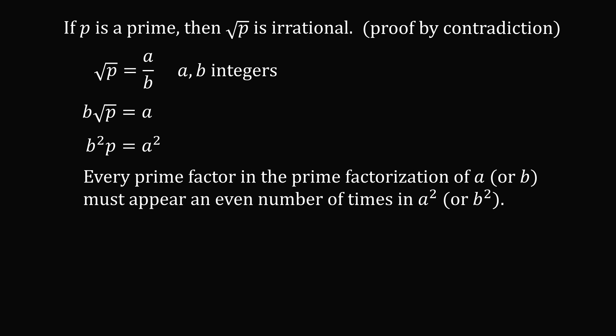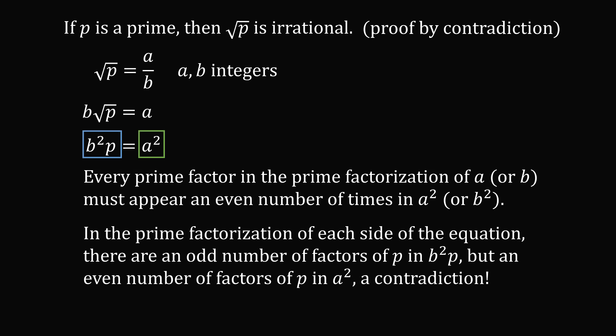Now, every prime factor in the prime factorization of A or B must appear an even number of times in A² or B². The left hand side B²p will have an odd number of factors of p, while the right side A² will have an even number of factors. So, in the prime factorization of each side of the equation, there are an odd number of factors of p in B²p, but an even number of factors of p in A². So, this is a contradiction. Our assumption that the square root of p was rational was false, and therefore, square root of p must be irrational.